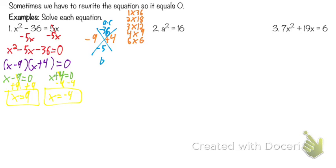Number 2: is this equal to zero? No. So what do we have to do? Subtract 16 from both sides. 16 minus itself is zero, and on the other side we have a squared minus 16 equals zero. Now it equals zero, but we still don't have multiplication — so we need to factor.